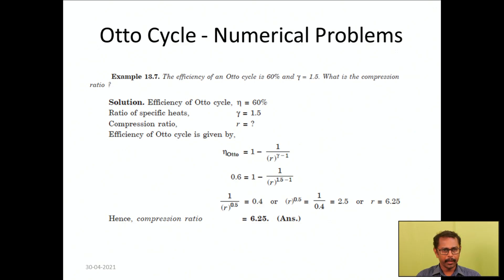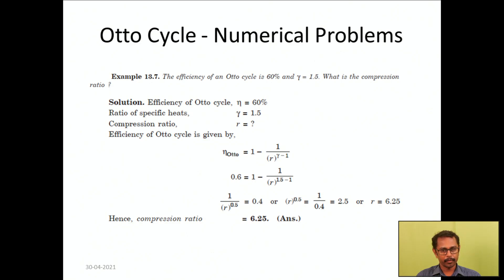Now we will solve some numerical problems on the Otto cycle. Problem 1: The efficiency of the Otto cycle is 60% and the specific heat ratio is 1.5. What is the compression ratio? Using η = 1 − 1/R^(γ−1): 0.6 = 1 − 1/R^(1.5−1). Solving this equation, the compression ratio R is found to be 6.25.